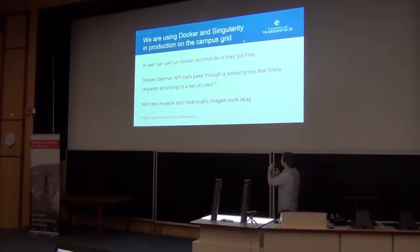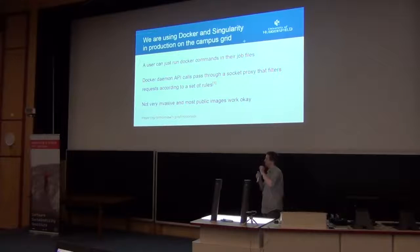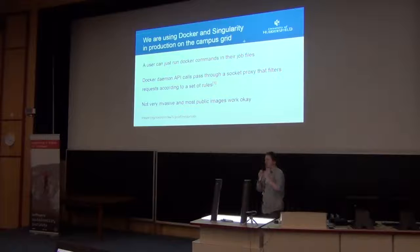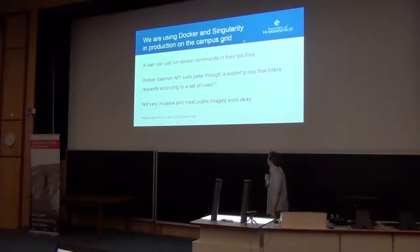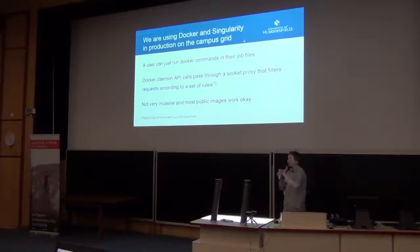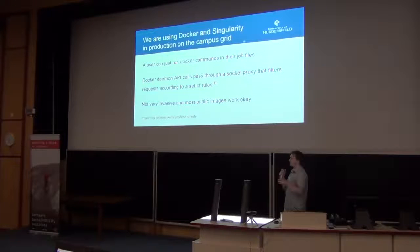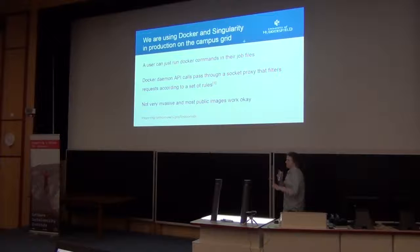Our solution was to come up with a proxy, because it's just a REST API. The proxy will handle the requests that the user is making, so if they specify a privilege model, it's going to strip that out. It's not very invasive into the way that users used to be using Docker, and most of the images they've tried have worked okay as well.